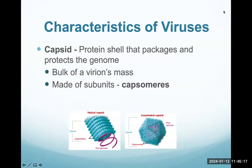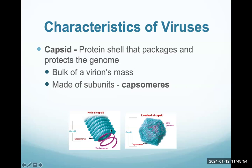The capsid is that protein shell that packages and protects the genome inside of it. It makes up the majority of the virion's mass, and it's actually made up of identical subunits — capsomeres — that are put together to form the capsid. One type of capsid is a helical capsid, which looks like a hollow tube. On the right side we have a different shape called an icosahedral capsid. Again, it's made up of capsomeres that form the capsid, and on the interior in purple is the viral genome, protected by that capsid.